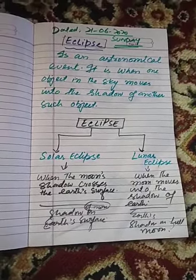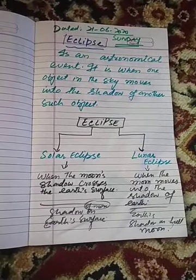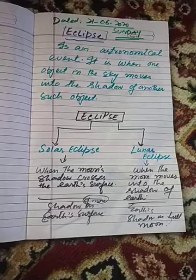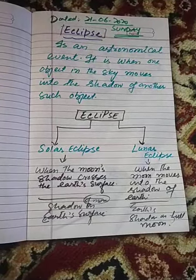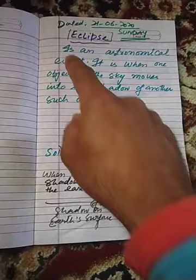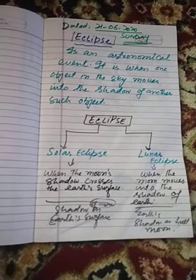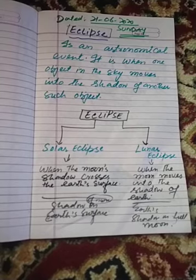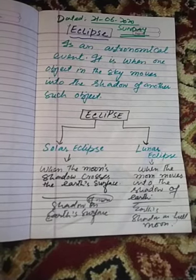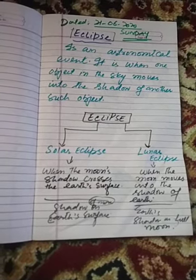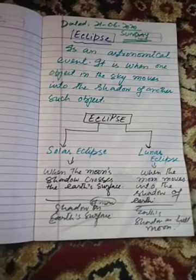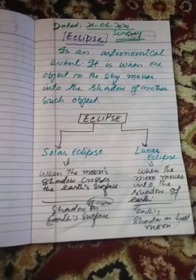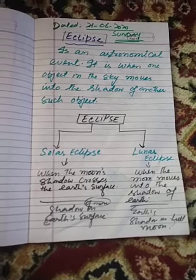First of all, we must know what an eclipse is. Eclipse is an astronomical event. It is when one object in the sky moves into the shadow of another such object — when we look at the sun or the other object, that we call an eclipse.